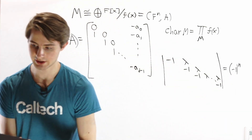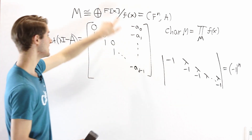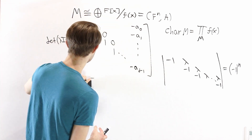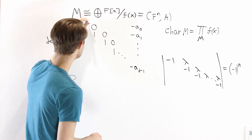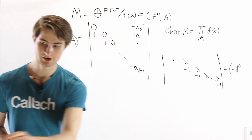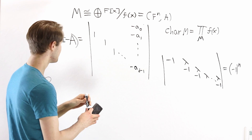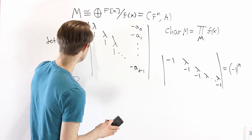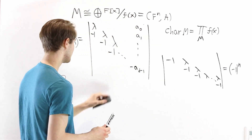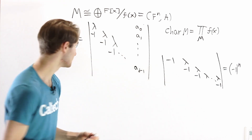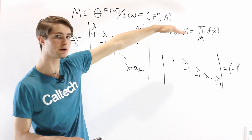Now let's look at the main determinant — det(λI - A), where A is our companion matrix block. Along the diagonal, the zeros become lambdas, so we have λ, λ, λ along the diagonal. Because we're subtracting A, all the ones turn into negative ones. The negatives become positives, and the last diagonal entry becomes λ + A_{d-1}. Now we expand along the top row.